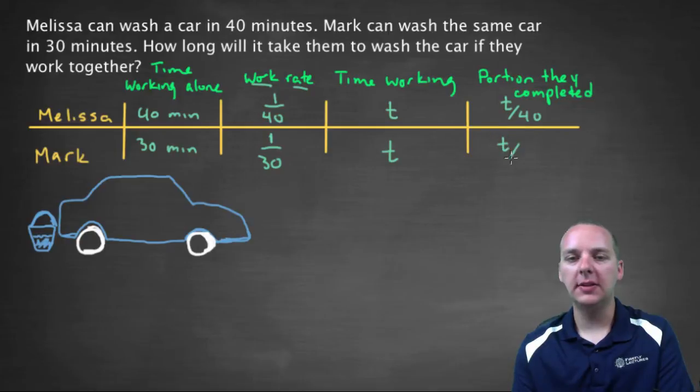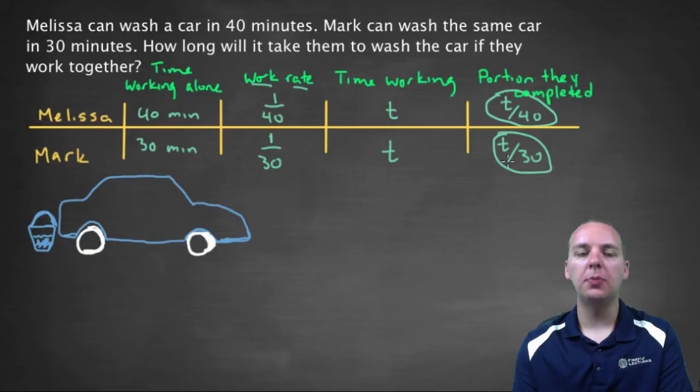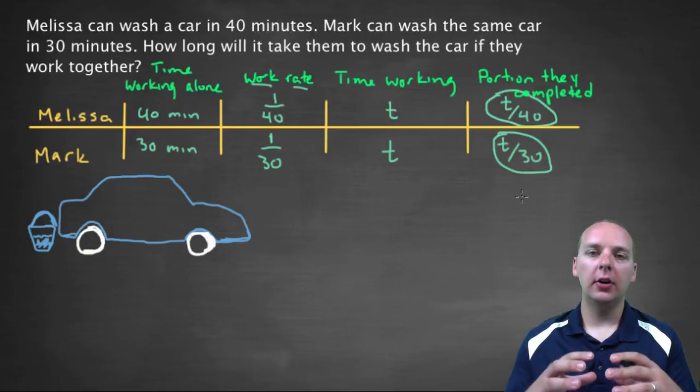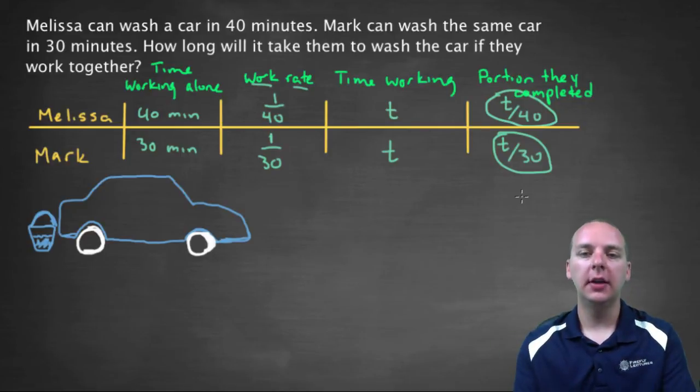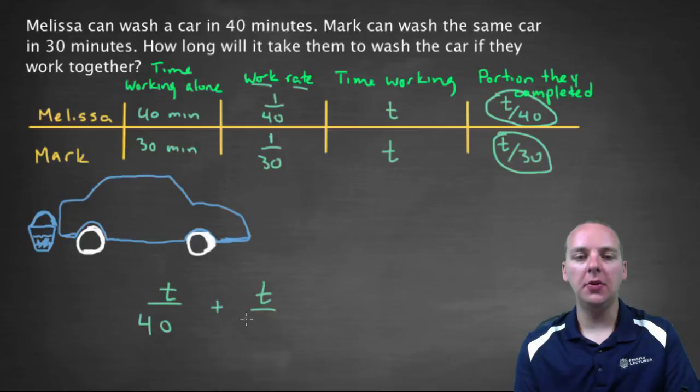The portion Mark completed was T over 30 for the same reason, alright? So this is how much Melissa completed. This is how much Mark completed. So together, they should have washed the entire car. That was that first page that you saw earlier. So if you're going to take this math paragraph, and turn it into a math equation, it would look something like this. So let's say T over 40 plus T over 30 should equal one whole car that they washed together.